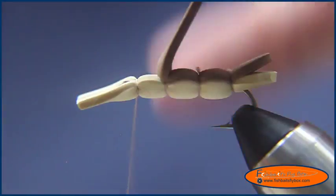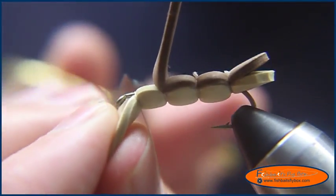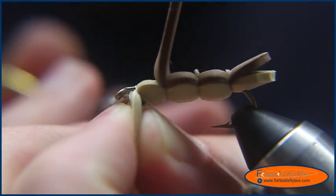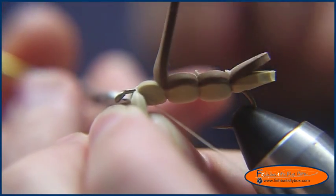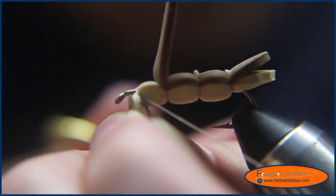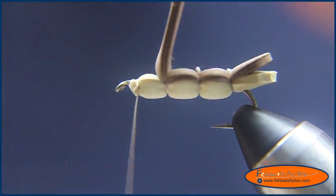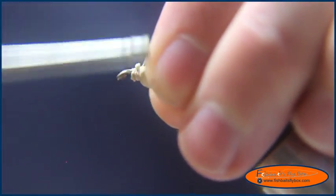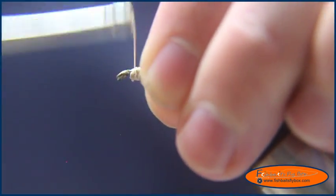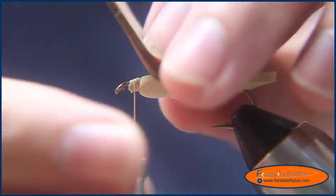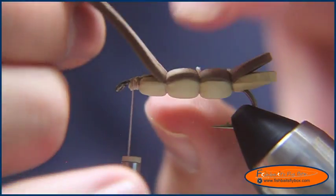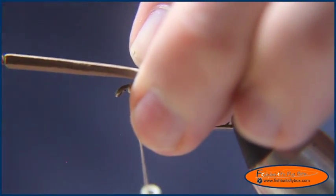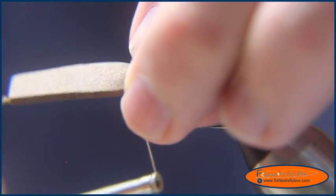And then we're going to grab our scissors, and we're going to cut this foam out of the way. I want to try to keep it tight, and not cut our thread. And then we're going to hold the craft foam with our fingers, and just wrap that down. Just wrap that down, and we're going to bring this craft foam back over to the top, and we're going to put a couple wraps into it.